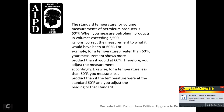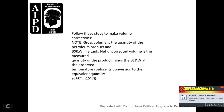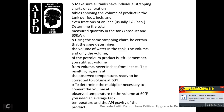For example, if the temperature is greater than 60 degrees Fahrenheit, your measurement shows more product than would exist at 60 degrees, so you adjust the measurement accordingly. Likewise, if the temperature is less than 60 degrees Fahrenheit, you may measure less product than at 60 degrees, so you adjust the reading to the standard. Follow these steps to make volume corrections: gross volume is the total quantity of petroleum product and bottom sediment and water. Net uncorrected volume is the measured quantity of product minus the bottom sediment and water at the observed temperature, before conversion to an equivalent quantity at 60 degrees Fahrenheit or 15 degrees Celsius.